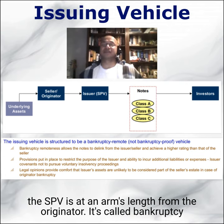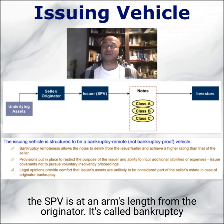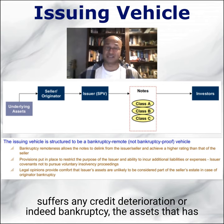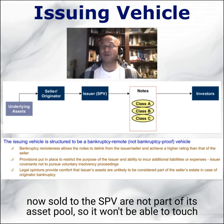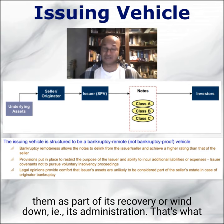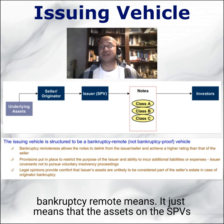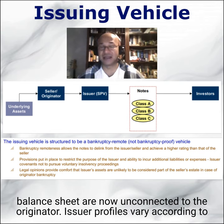The issuing vehicle — the SPV — is at arm's length from the originator. It's called bankruptcy remote. What that means is if the originating institution, the bank, suffers any credit deterioration or indeed bankruptcy, the assets it has sold to the SPV are not part of its asset pool. It won't be able to touch them as part of its recovery, wind down, or administration. The assets on the SPV's balance sheet are now unconnected to the originator.